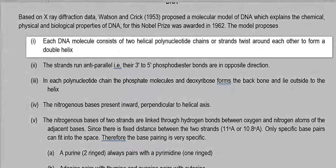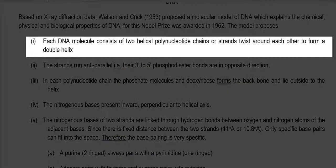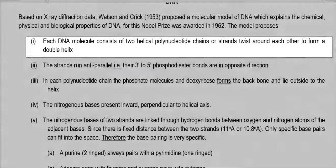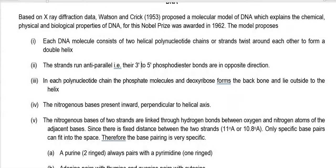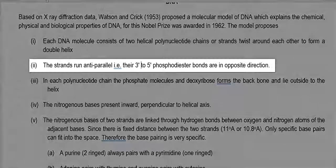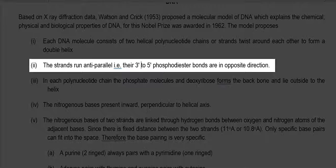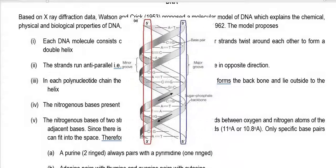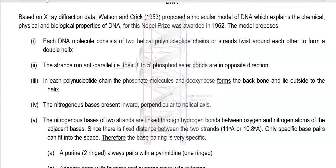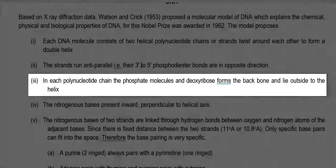Each DNA molecule consists of two helical polynucleotide chains or strands that twist around each other to form a double helix. The strands always run anti-parallel — that is, their 3' to 5' phosphodiester bonds located in the chain are always in opposite directions.